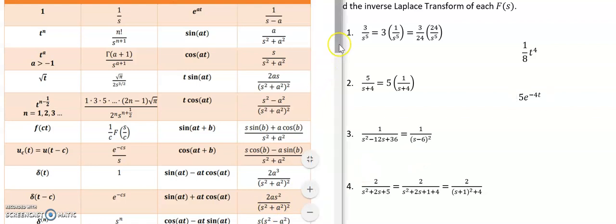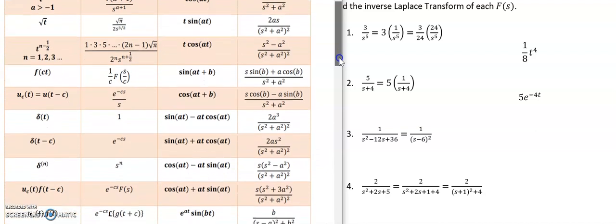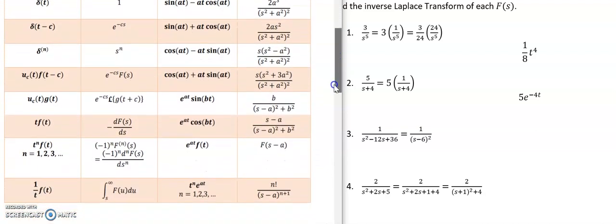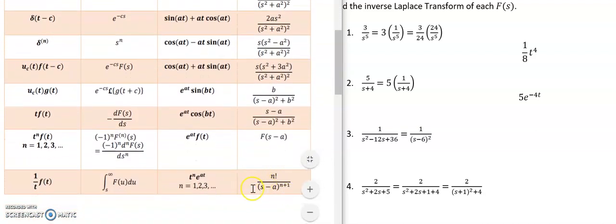And so if I go to my Laplace transforms, I get this function right here. So we've got a constant in the numerator, and I've got some linear factor raised to a power in the denominator. Now, in this case, since this is one power more than n, n is going to be equal to 1, and 1 factorial is just 1, so I'm good there.